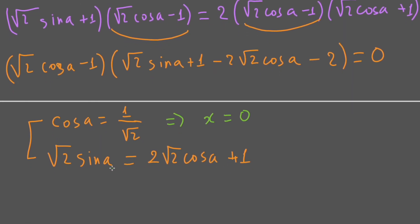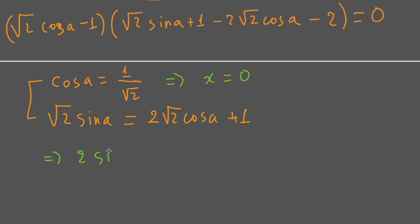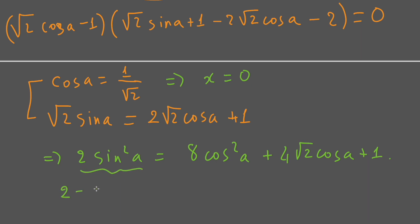For the second case, since sin a is greater than 0 and cos a is also greater than 0, we can square both sides of that equation. That gives us 2 sin²a equal to 8 cos²a plus 4 times the square root of 2 times cos a plus 1, and this equals 2 minus 2 cos²a, which simplifies to cos²a plus cos a plus 1.